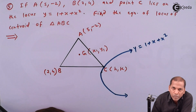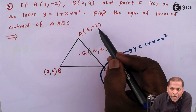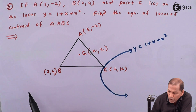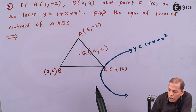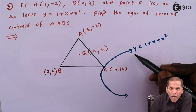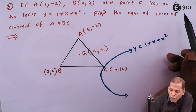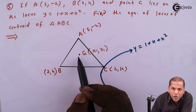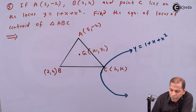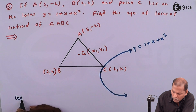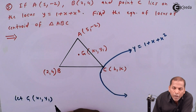Now let's see the solution. First we draw the figure of triangle ABC: A has coordinates (5, -2), B has coordinates (2, 4), and the coordinates of C are not given, so we consider them as (h, k). Point C lies on the locus whose equation is y = 1 + x + x². Our goal is to find the equation of locus of the centroid. Let capital G be the centroid of triangle ABC with coordinates (x1, y1).